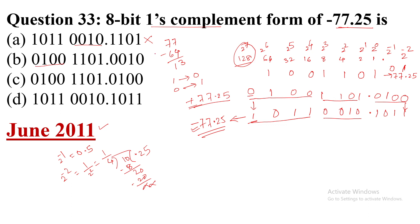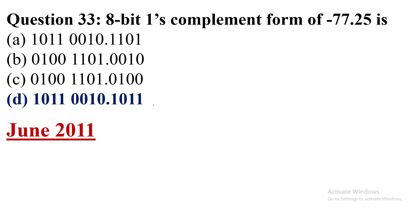Option A is wrong. Option C has given 0100, which is also wrong. Option D gives 1011 then 0010.1011 — yes, that matches. So the correct answer to this question is option number D. Thank you very much for watching this video.